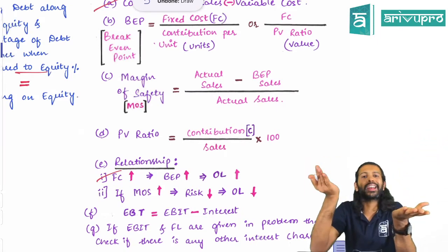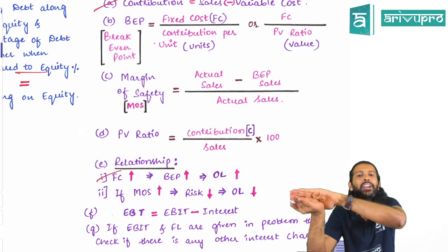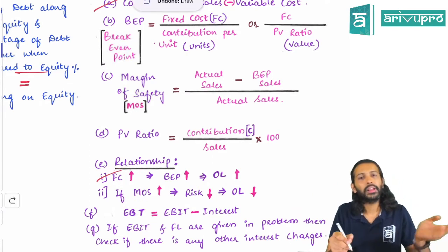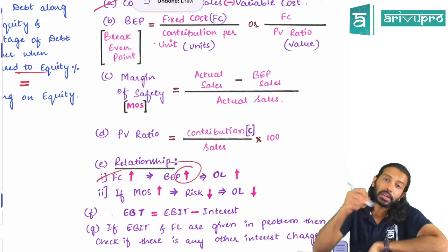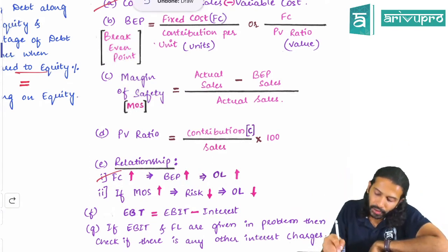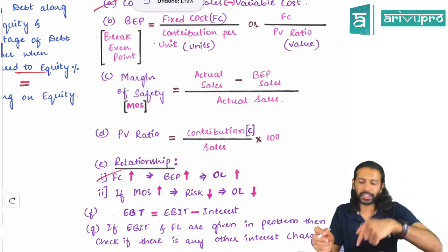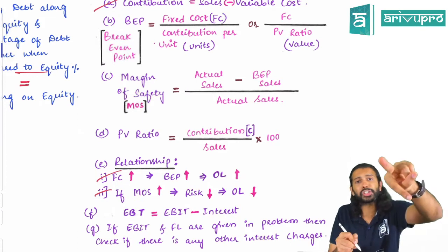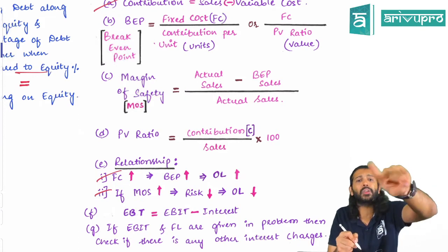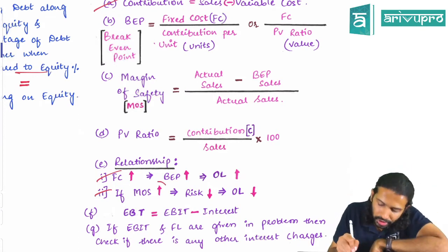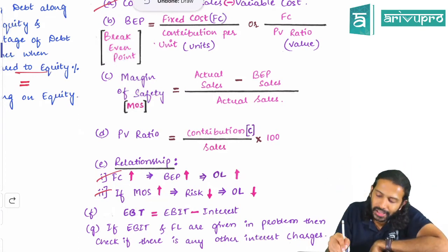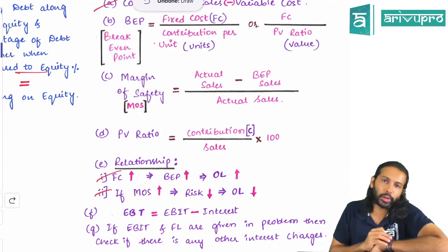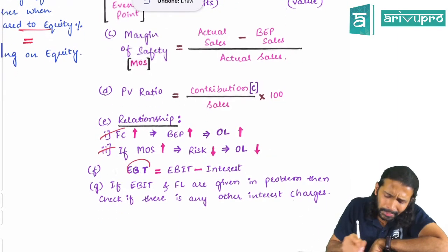Fixed cost has a direct relationship with break-even point and operating leverage. If fixed cost is higher, the break-even point in units will also be higher, and so will operating leverage. However, margin of safety has an inverse relationship: if margin of safety increases, the risk element reduces, and hence operating leverage also reduces.